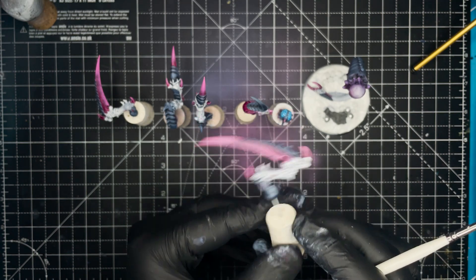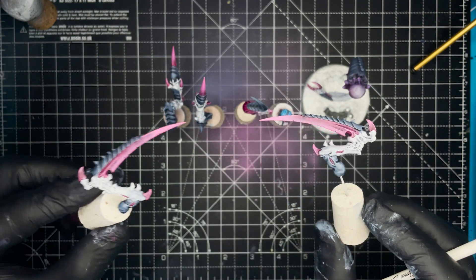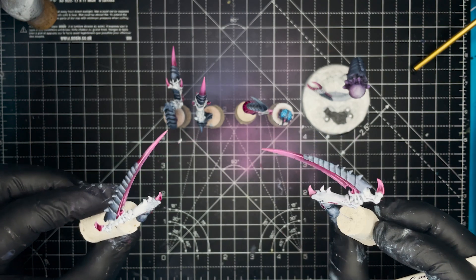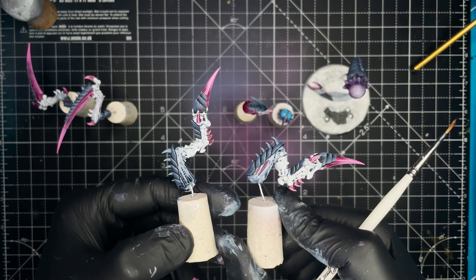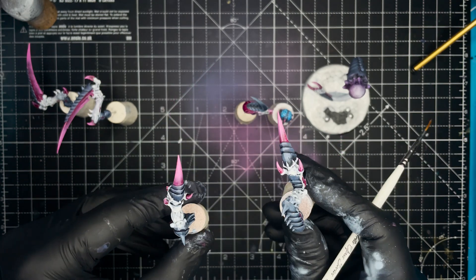And I also painted in all of the claws and horns on the model using Citadel Contrast Volupus Pink, and all of these were highlighted up with Army Painter Pixie Pink.